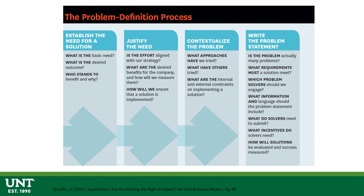This is another way of looking at problem definition as a process, more from an organization or company's perspective, from a Harvard Business Review article. It's very similar to Checkland's first few steps. First, we have to establish the need for a solution — we can't solve problems that don't need to be solved. We need to justify the need: why is it important to us and the company? We need to contextualize the problem, getting back to our root definitions and expressing the problem correctly. Then we write the problem statement, building our conceptual models. Once we have a written problem statement that we all understand, we can move forward with a solution.